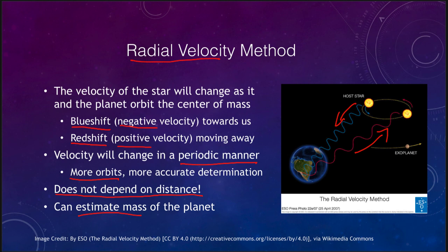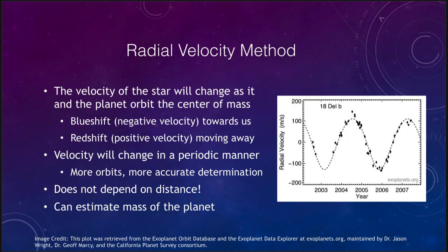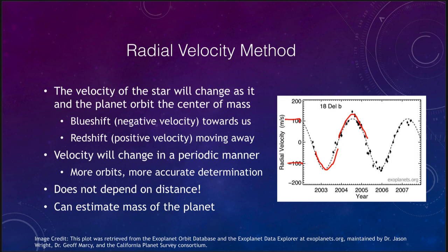When we look at the data from this method, we see that the star will vary in velocity — a negative velocity when it's moving towards us, and then a positive velocity when it's moving away. We see this constant periodic change, and we can fit that with a periodic curve. The amount of the velocity change will allow you to determine the mass of the planet, so we can actually determine some of the properties of the exoplanet from these types of observations.